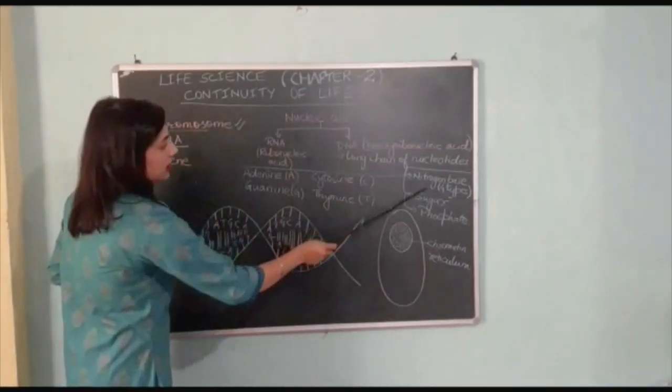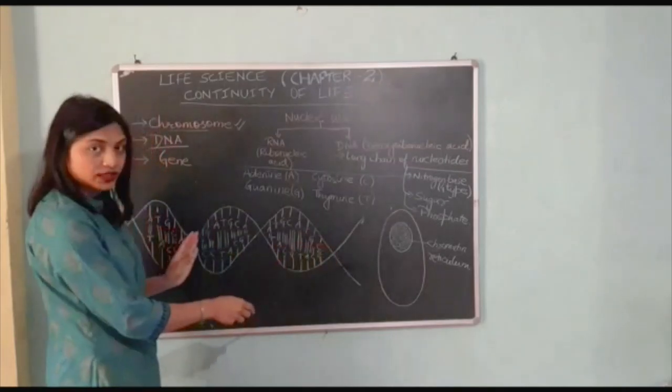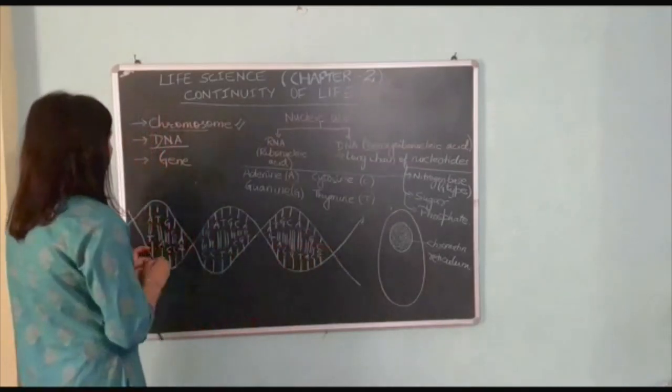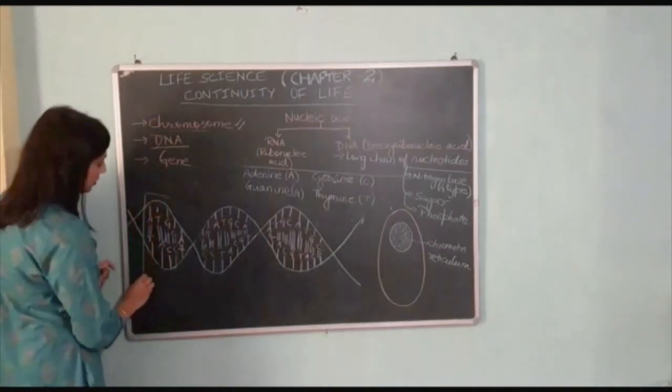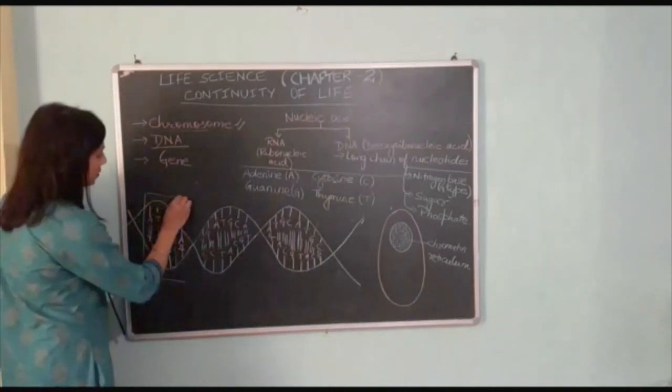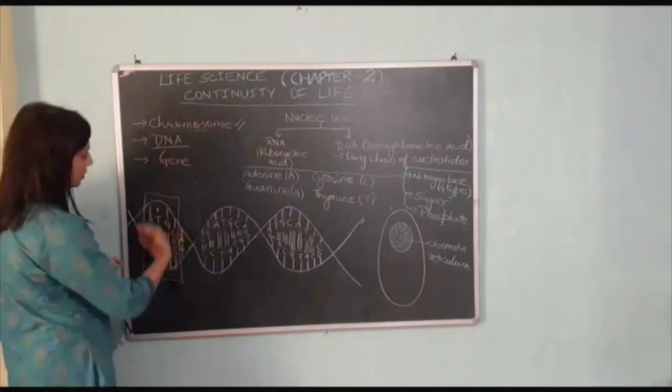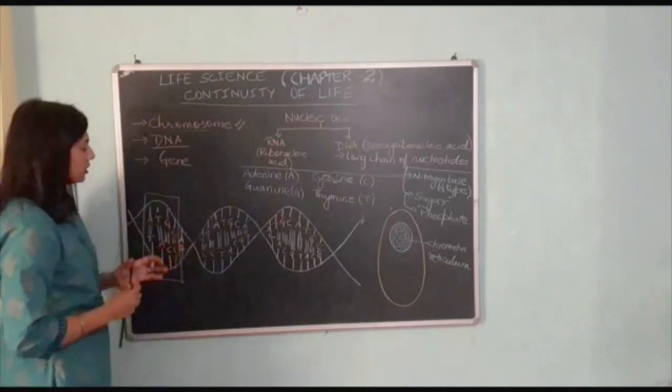In DNA, nucleotides have nitrogen base, sugar, phosphate. The nitrogen bases in the DNA strand form protein codes. So what is this protein code?